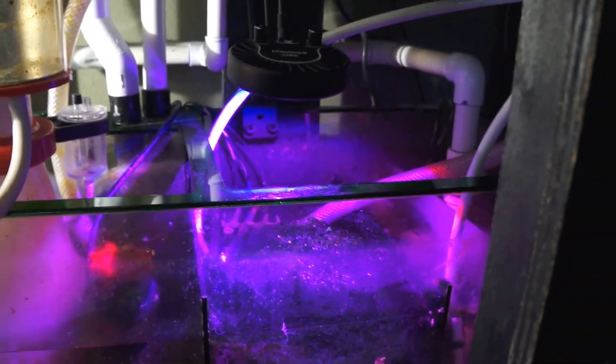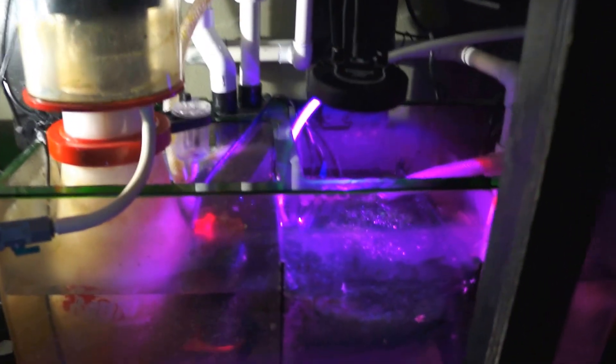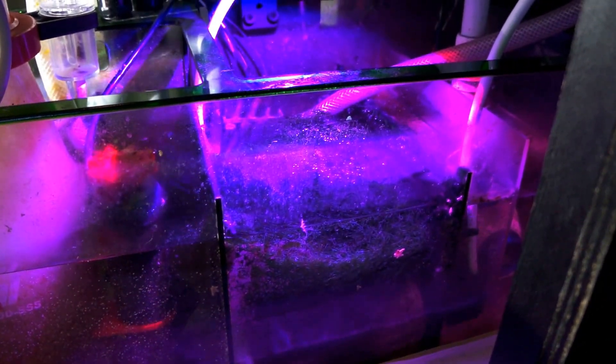And I'm doing a reverse cycle, so 12 hours of light with the display. And this is off, and then in reverse, when the display lights go off, the fuge light turns on. It stays on overnight.